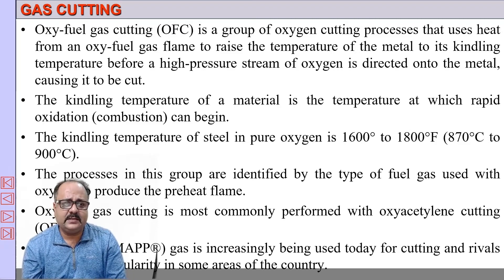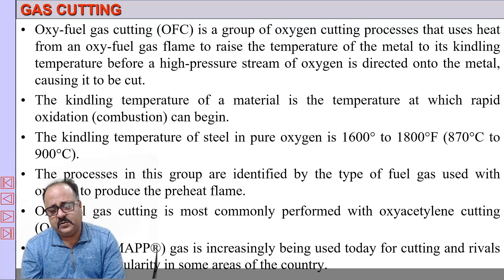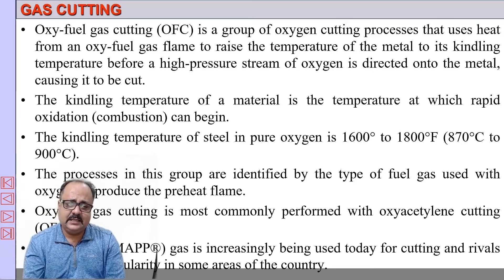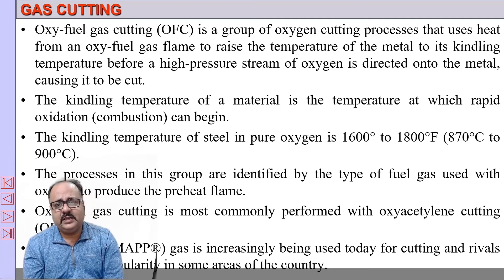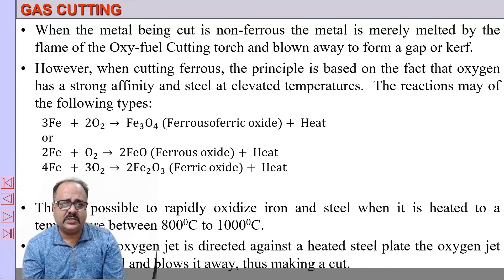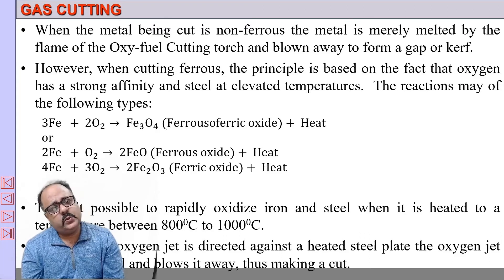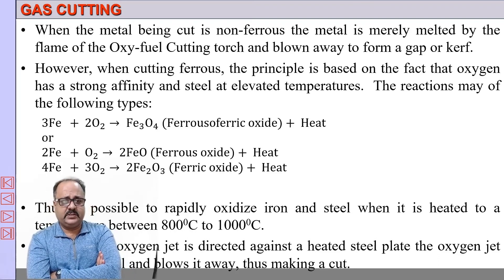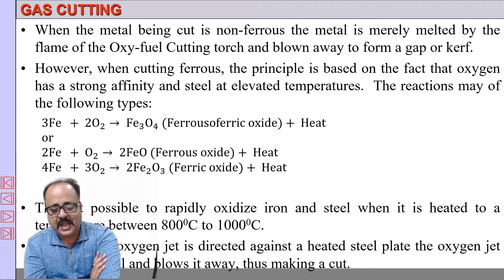For oxy-fuel cutting, there is an important temperature called the kindling temperature — the temperature at which rapid oxidation or combustion of a material can be sustained. The kindling temperature for steel in pure oxygen is around 870 to 900 degrees centigrade. If steel is in that temperature range and we pass oxygen, we can cut the steel easily. When the jet of oxygen strikes already heated steel, the oxygen reacts with the iron in the steel and forms ferrous oxides, which are extremely brittle and can be blown away by the force of the oxygen jet, carrying out a cut.